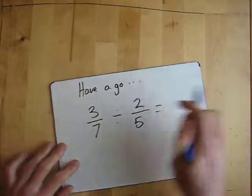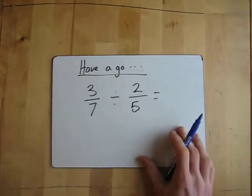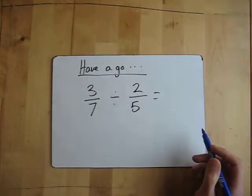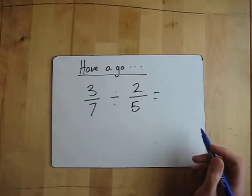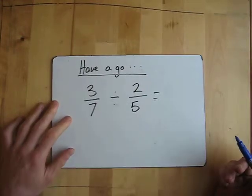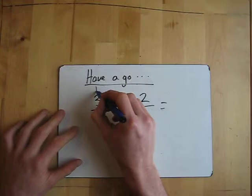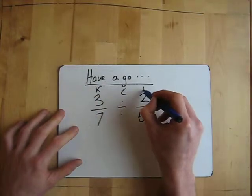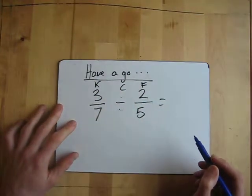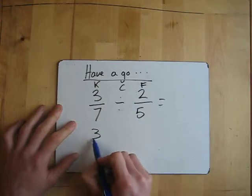So one for you to have a go at yourself. Have a go at this, pause this and I'll go through the answer in about three seconds. Three, two, one. So keep, change, flip: KCF.